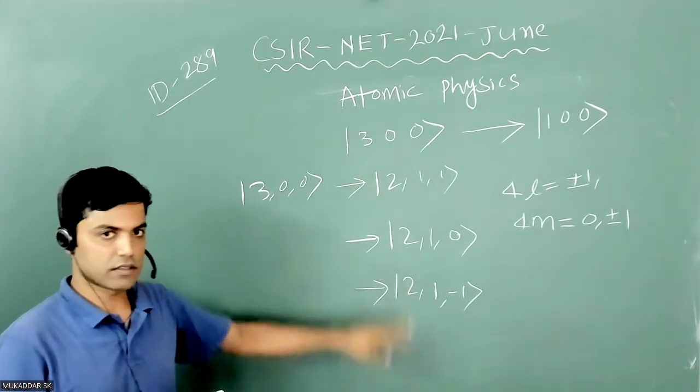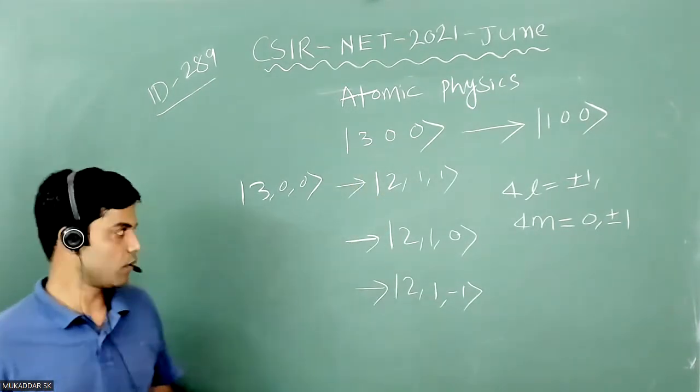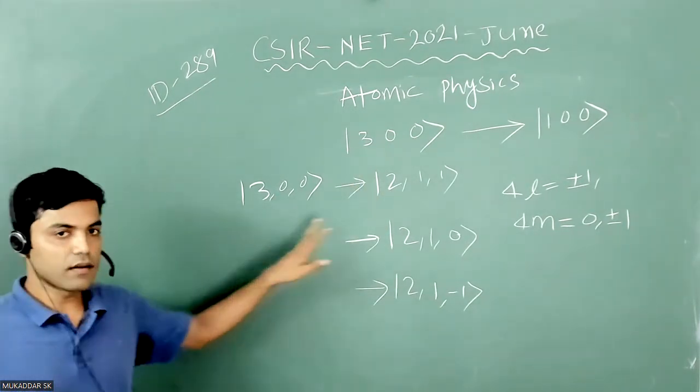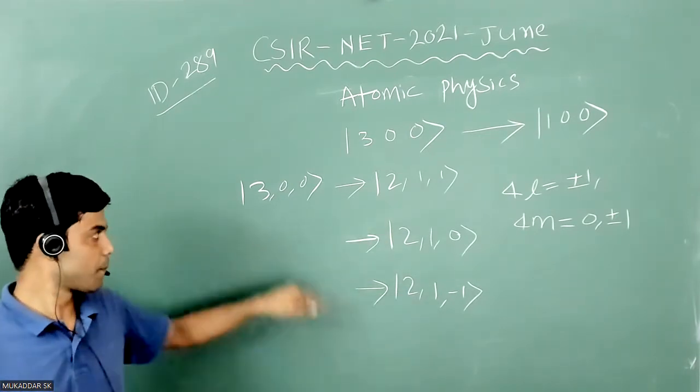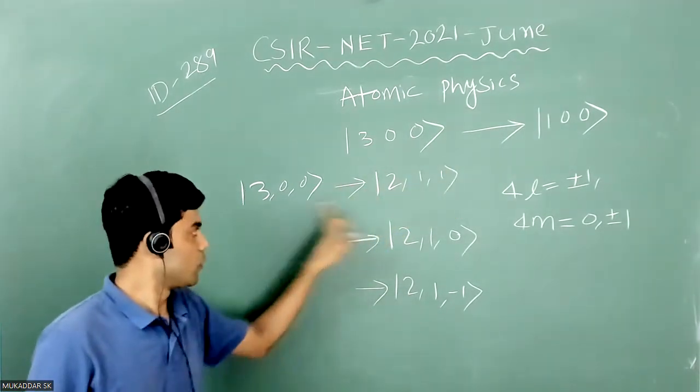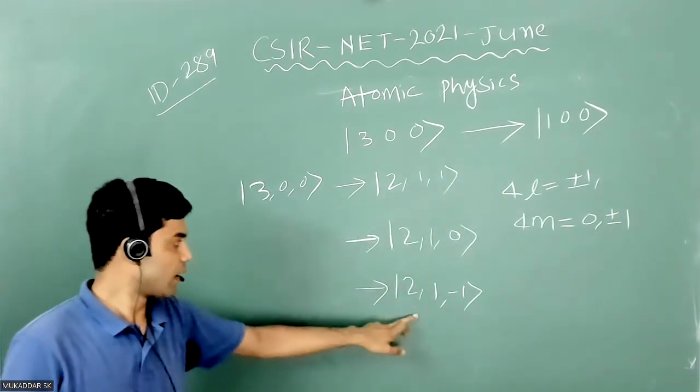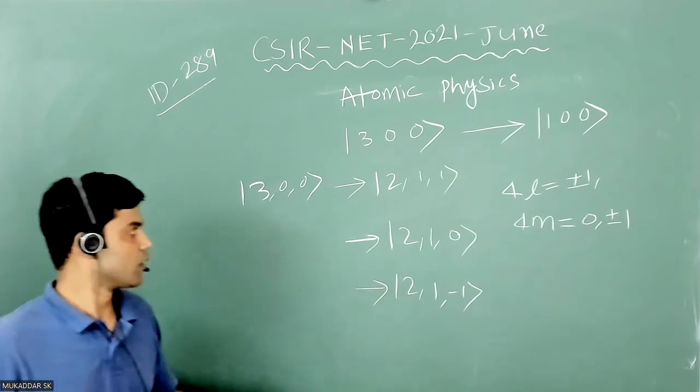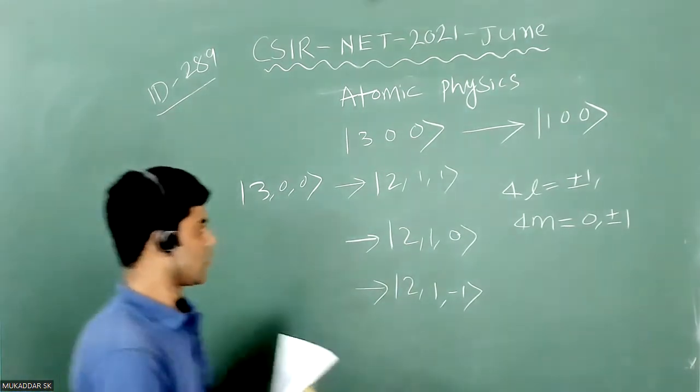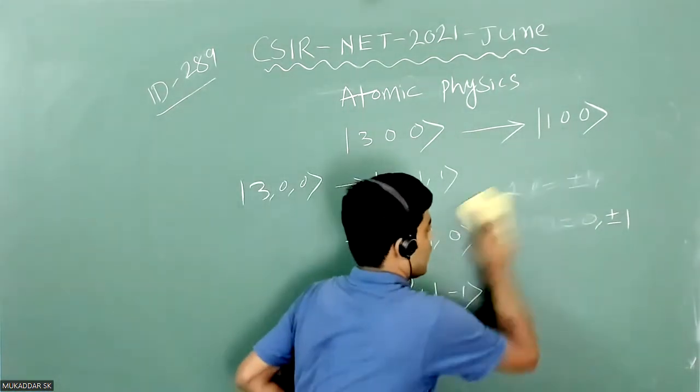So all possible transitions are possible here. Now all transitions are equally probable. It means the probability for this decay will be 1 by 3, for this decay will be 1 by 3, and for this decay will be 1 by 3. So it means according to the option what they have given.